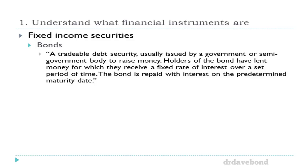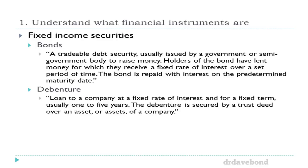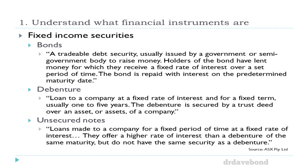When we're talking about bonds, it's a tradable debt security usually issued by a government or semi-government body to raise money. Holders of the bond have lent money for which they receive a fixed rate of interest over a set period, repaid on the predetermined maturity date. Debentures are effectively the same thing — a loan at a fixed rate of interest, fixed term, usually one to five years, secured over some sort of asset. An unsecured note is a loan by the company at a fixed rate of interest, fixed period, but not secured over something, so generally the interest is higher. In each case — bonds, debentures, unsecured notes — the issuer has borrowed money from somebody.